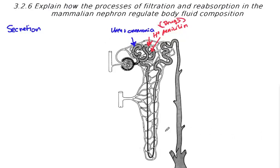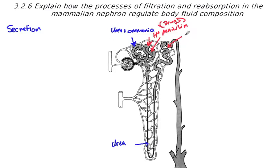As mentioned before, there is passive movement by diffusion of urea into the descending arm of the loop of Henle, and this is all part of the cycling nature that allows more water to be reabsorbed in the collecting duct. In the ascending arm we see active secretion of potassium ions and active secretion of hydrogen ions.